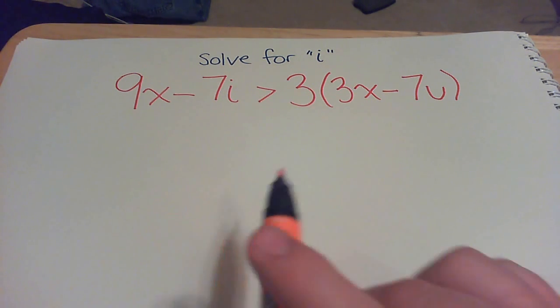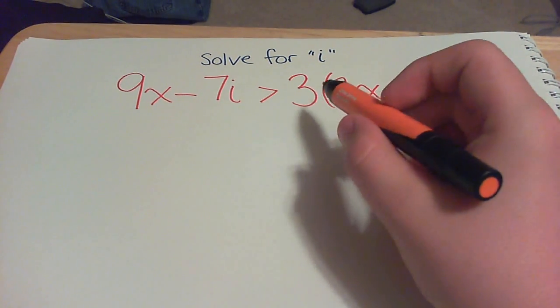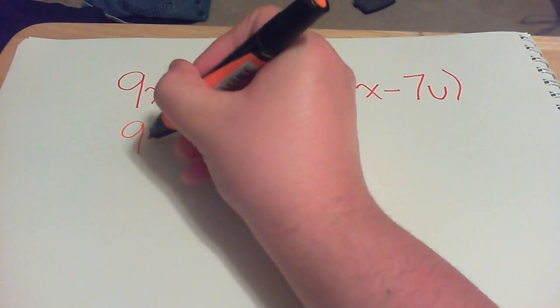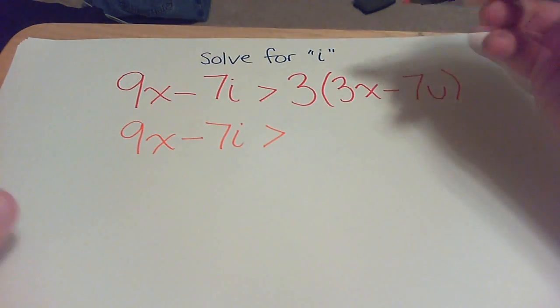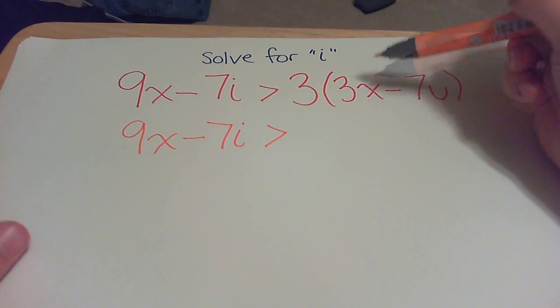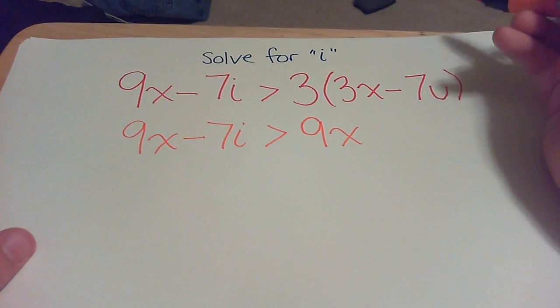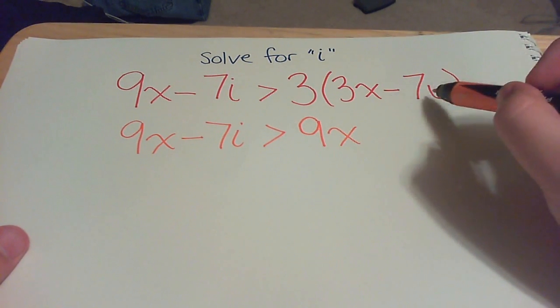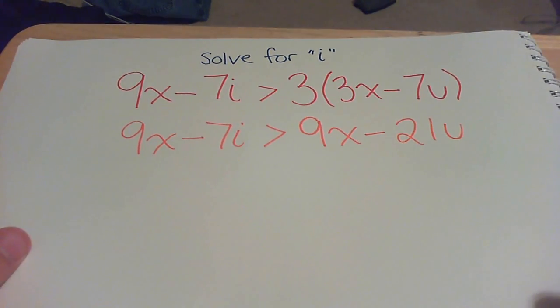So the first thing you're going to do is you're going to distribute the 3. So what that's going to do is this side will stay the same. What you're going to do is you're going to do 3 times 3x and that will give you 9x, and then 3 times negative 7u will give you minus 21u. So that's the next part of the equation.